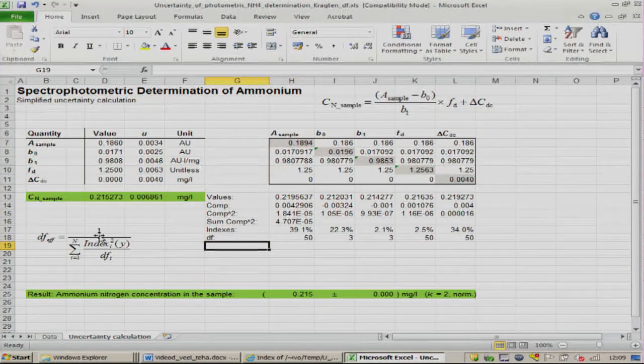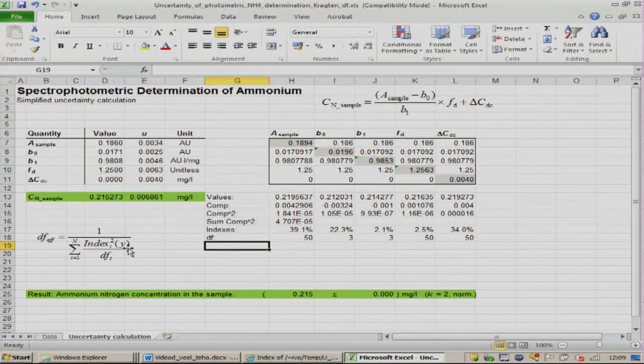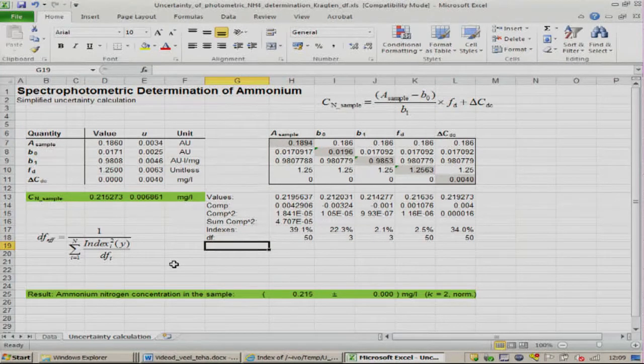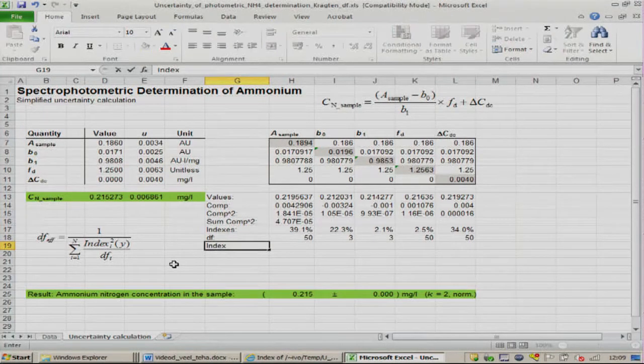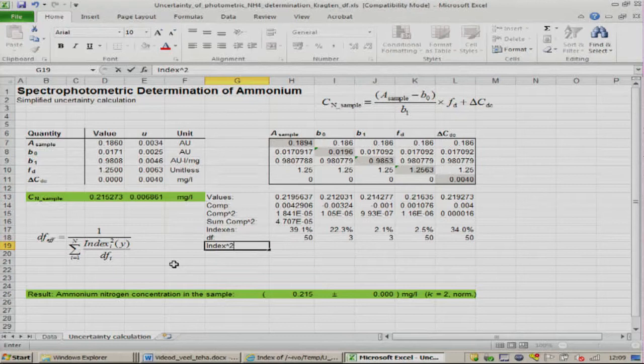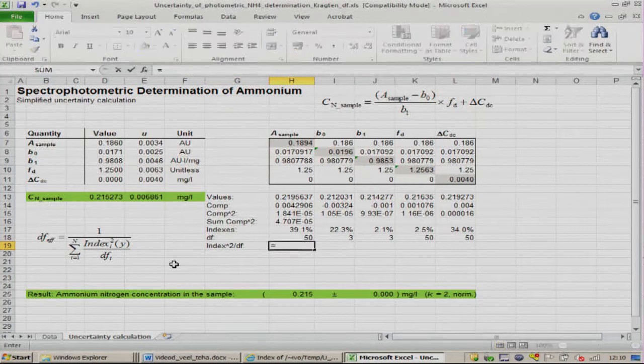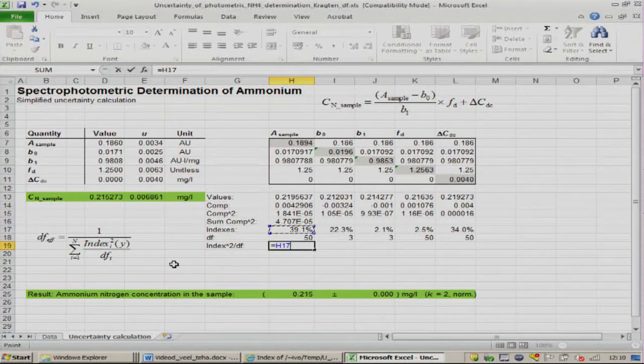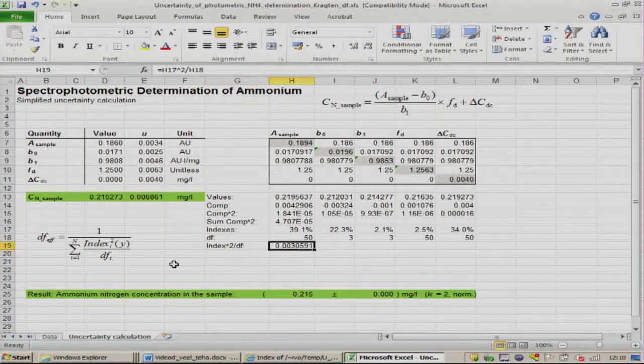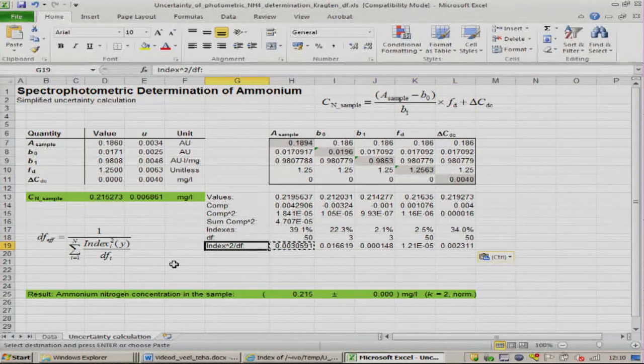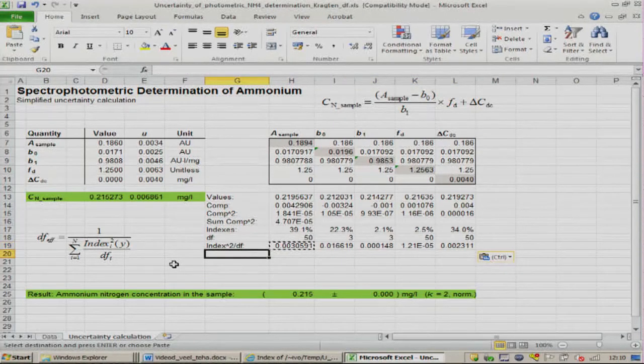Now we have to calculate the ratios of index squared versus the number of degrees of freedom. And this we will do here in this row: index squared divided by the degrees of freedom. So now we have all the ratios here.